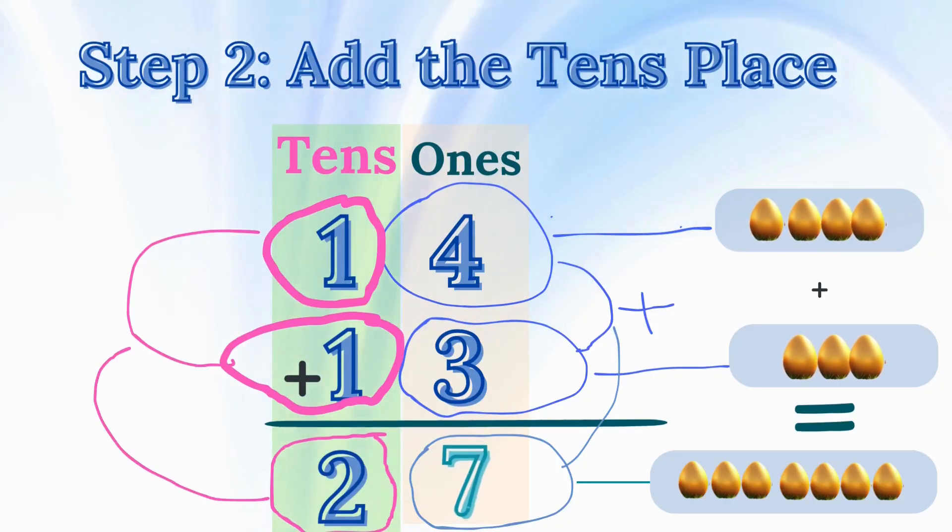Step 2: Add the 10s place. Now, let's look at the 10s place. In 14, there's a 1 in the 10s place. In 13, there's also a 1 in the 10s place. Let's add 1 plus 1. 1 plus 1 equals 2. So, we put 2 in the 10s place of our answer.